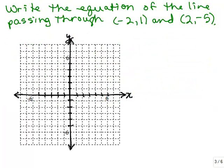Here's an example: write the equation of the line passing through negative 2, 1 and 2, negative 5. Let's do this graphically — let's simply plot those two points and see if we can tell what the slope and the y-intercept is.